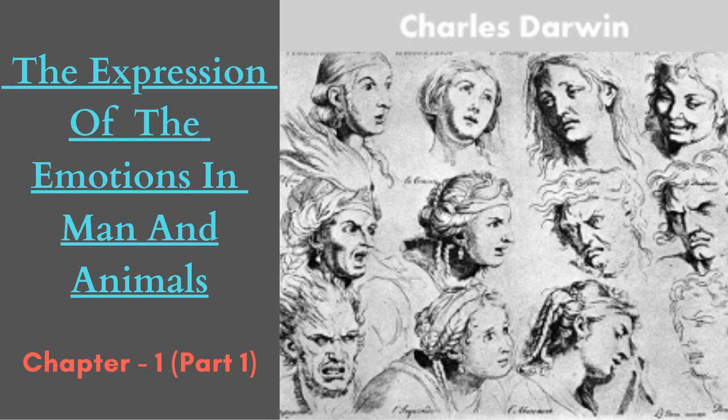The violence of a start seems to depend partly on the vividness of the imagination and partly on the condition — either habitual or temporary — of the nervous system. He who will attend to the starting of his horse when tired and when fresh will perceive how perfect is the gradation, from a mere glance at some unexpected object with a momentary doubt whether it is dangerous, to a jump so rapid and violent that the animal probably could not voluntarily whirl round in so rapid a manner. The nervous system of a fresh and highly fed horse sends its orders to the motory system so quickly that no time is allowed for him to consider whether or not the danger is real. After one violent start, when he is excited and the blood flows freely through his brain, he is very apt to start again; and so it is, as I have noticed, with young infants.